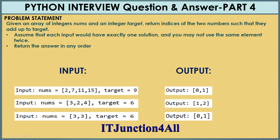Similarly in the second example, the target is 6. If you add the second and third numbers whose indices are 1 and 2 respectively, that's what's shown in the output. In the third example, the input is 3, 3 and the target is 6. Both the first and second numbers add up to 6, so the indices are 0 and 1. For this problem we have two assumptions: each input would have exactly one solution and you may not use the same element twice.